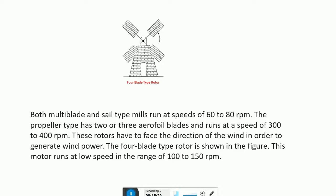Both multi-blade and sail type mills run at a speed of 60 to 80 RPM. The propeller type has 2 or 3 aerofoil blades and runs at a speed of 300 to 400 RPM. These rotors have to face the direction of the wind in order to generate wind power. The four-blade type rotor runs at a low speed in the range of 100 to 150 RPM.